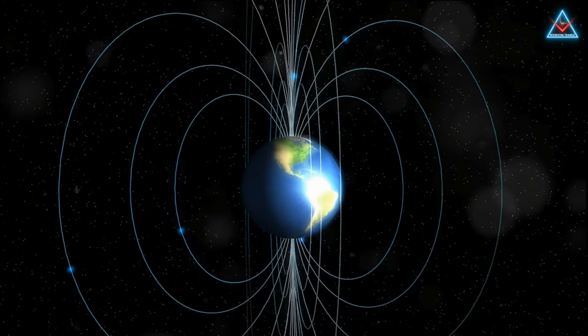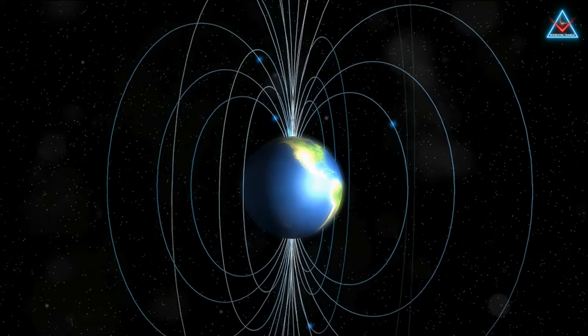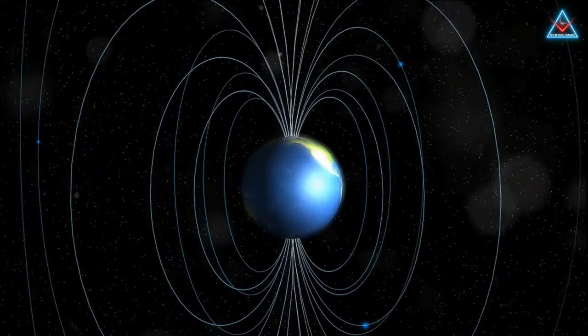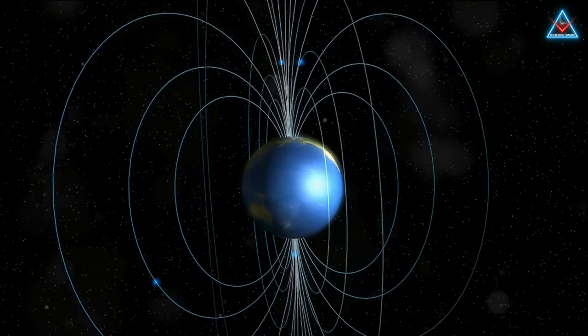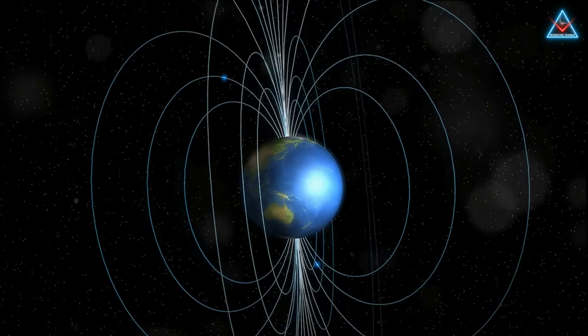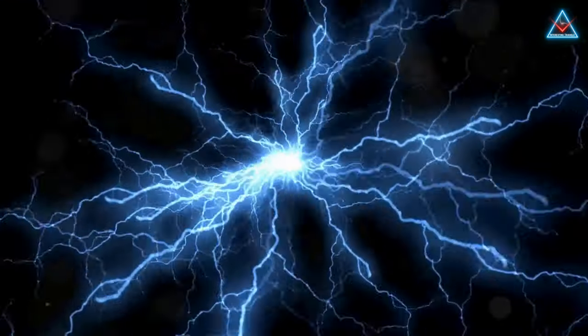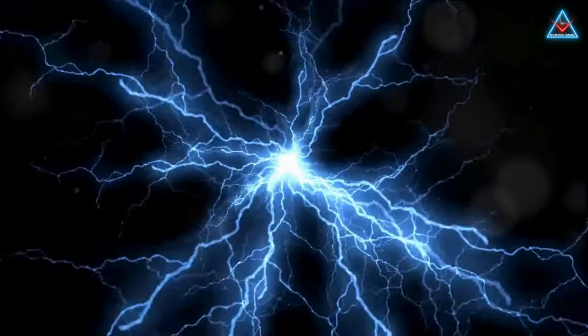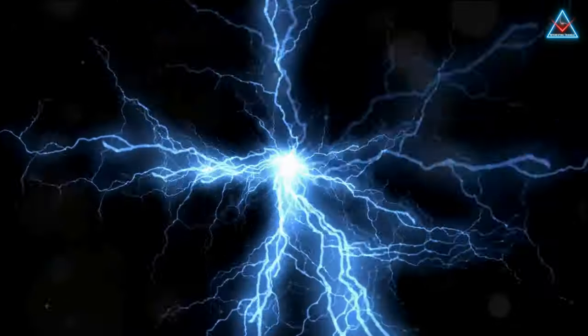These two regions aren't just sitting pretty at the center of our planet. They're hard at work, creating the Earth's magnetic field. The movement of the liquid metal within the outer core generates electric currents which in turn produce magnetic fields. It's a complex dynamic system that's constantly in motion.